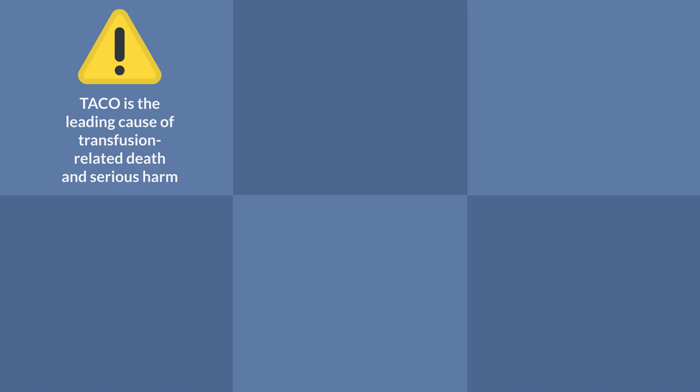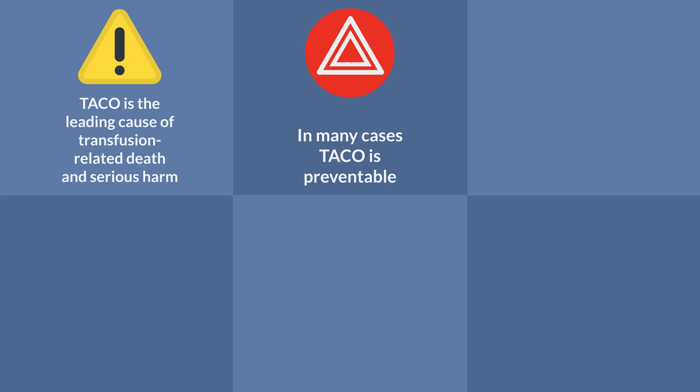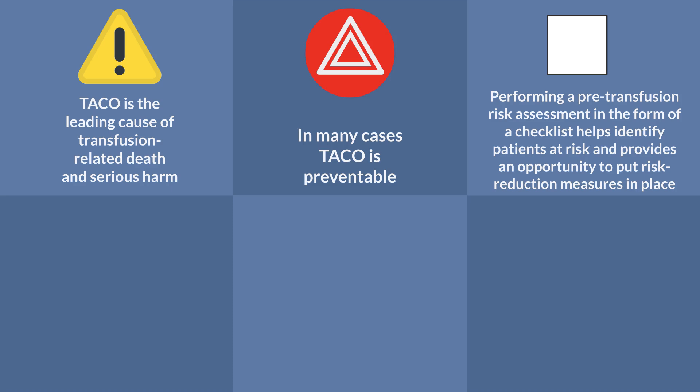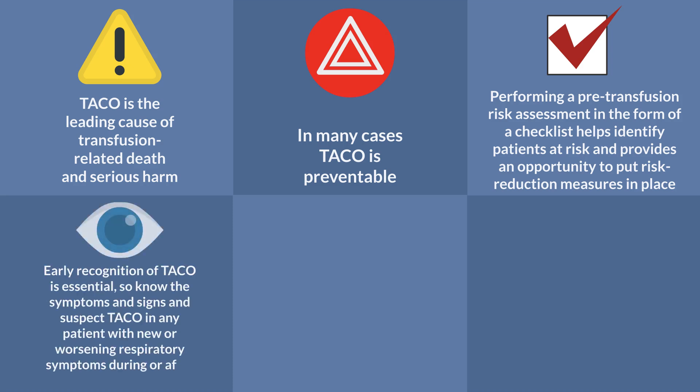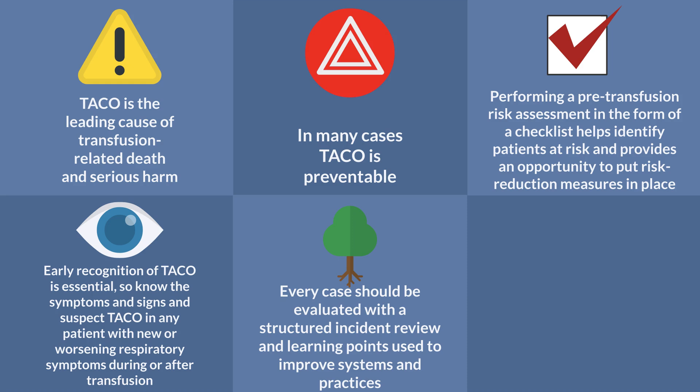In summary, TACO is a leading cause of transfusion-related death and serious harm, and in many cases is preventable. Performing a pre-transfusion risk assessment in the form of a checklist helps identify patients at risk and provides an opportunity to put risk reduction measures in place. Early recognition of TACO is essential — know the symptoms and signs, and suspect TACO in any patient with new or worsening respiratory symptoms during or after transfusion. Every case should be evaluated with a structured incident review, with learning points used to improve systems and practice. All suspected cases should be reported to SHOT and SABER.